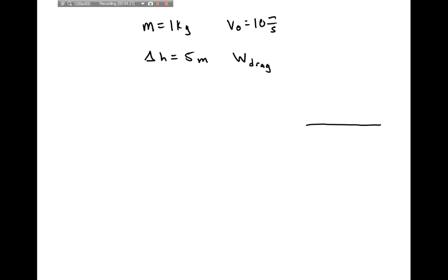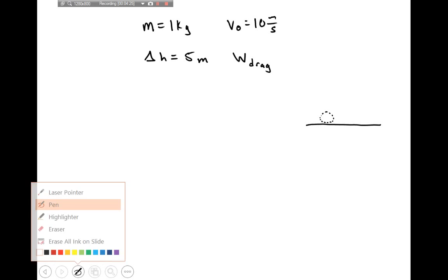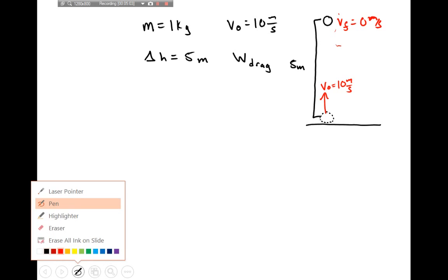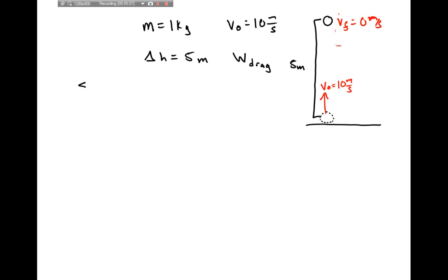Let me draw a picture of what's going on. The ball starts down at its initial position with an initial velocity v-naught of 10 meters per second. It travels up and eventually reaches its final position five meters above its initial height. At that final point, v-final is zero meters per second, because when an object reaches its maximum height, its vertical speed is zero.